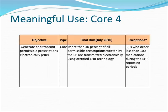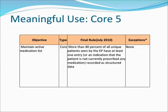Meaningful Use Core 4, Final Rule: More than 40% of all permissible prescriptions written by the EP are transmitted electronically using certified EHR technology. Exception: EPs who order less than 100 medications during the EHR reporting period. Meaningful Use Core 5, Final Rule: More than 80% of all unique patients seen by the EP have at least one entry, or an indication that the patient is not currently prescribed any medication, recorded as structured data. Exception: None.